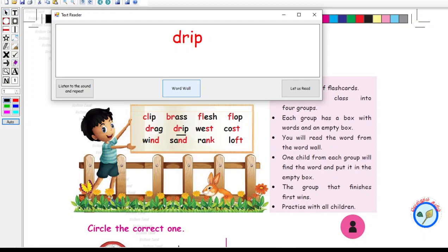Drip. Drip. West. West. Cost. Cost. Wind. Wind. Sand. Sand. Rank. Rank. Loft. Loft.